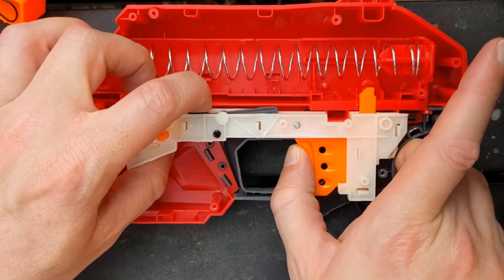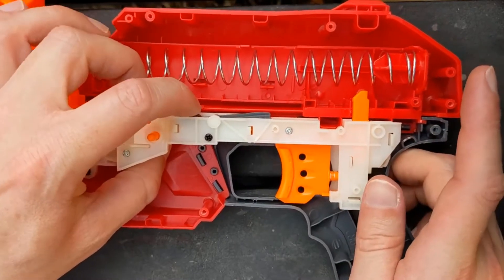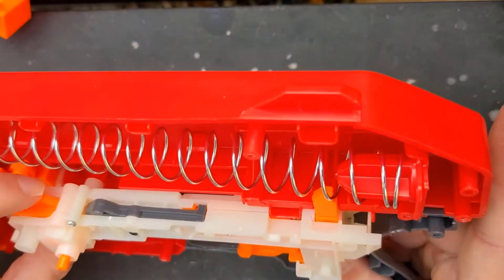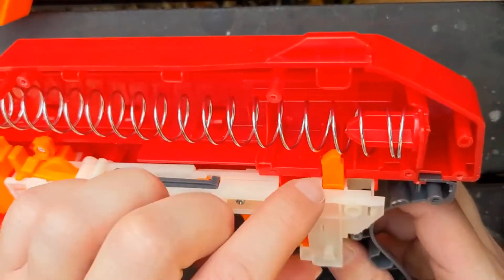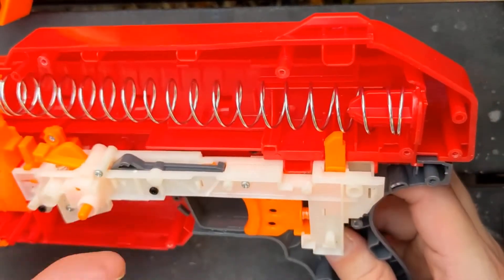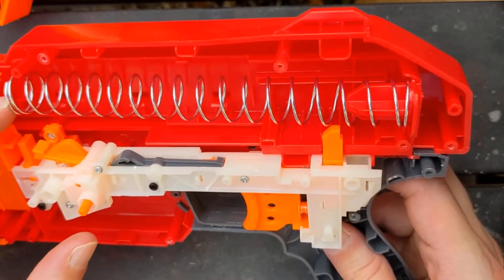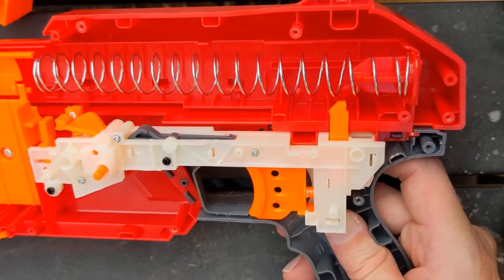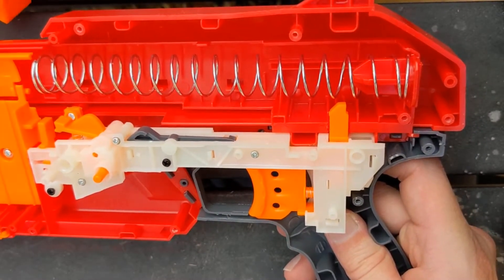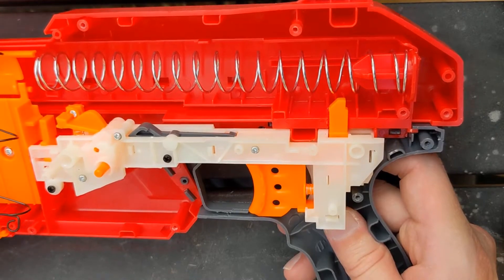So the black is your trigger pull. I have no idea what the orange does. That is a hell of a spring. I was just not expecting that much spring down there.